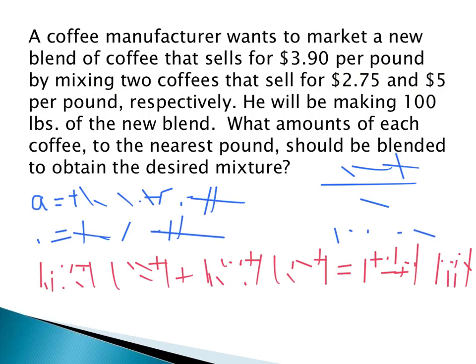So let's take that information. The cost per pound of A from the problem, it tells us $2.75. How much of A do we have? We don't know. We called that A. The cost per pound for B is $5, and how much of B? Well, there's 100 minus however much you have of A. The total weight is 100 pounds, and the price per pound of that final mix is $3.90. So this gives us our initial equation.